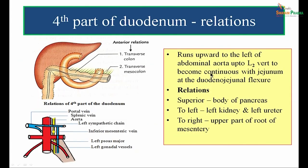The fourth part of the duodenum runs upwards to the left of the abdominal aorta up to the level of L2 vertebra, to become continuous with the jejunum at the duodeno-jejunal flexure. Anteriorly it is related to the transverse colon and transverse mesocolon. Posteriorly it is related to the left sympathetic chain, inferior mesenteric vein, left psoas major, and left gonadal vessels. Superiorly it is related to the body of pancreas. To the left is the left kidney and left ureter. To the right is the upper part of the root of mesentery.